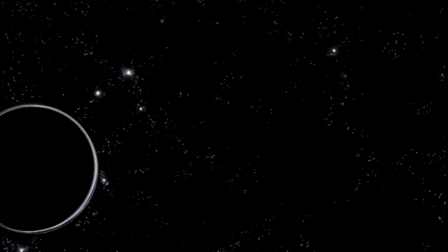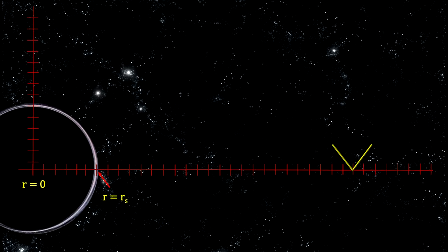We can use tipping light cones to show how all objects unfortunate enough to cross the event horizon are captured forever.